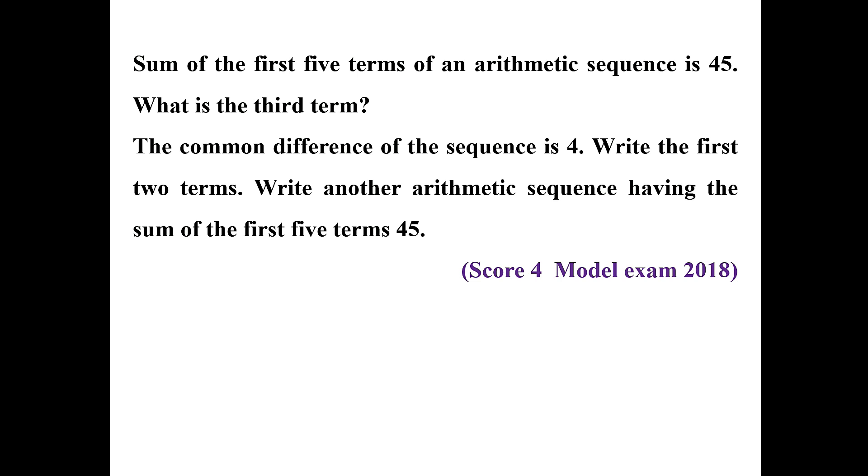Since the number of terms is odd, the middle term equals the sum divided by the number of terms. The third term is the middle term, so the third term equals 45 divided by 5, which is 9. Given that the common difference is 4, subtracting 4 from 9 gives the second term as 5, and subtracting again gives the first term as 1. So the first 2 terms are 1 and 5.